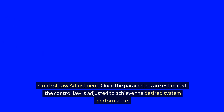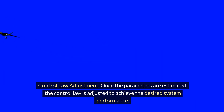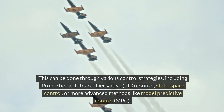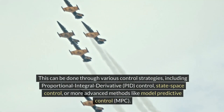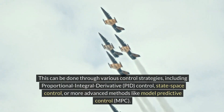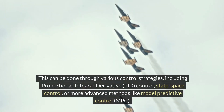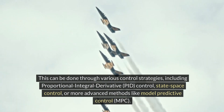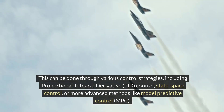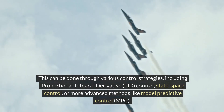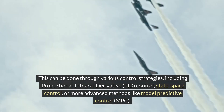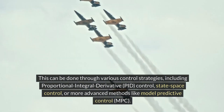Once the parameters are estimated, the control law is adjusted to achieve the desired system performance. This can be done through various control strategies, including proportional integral derivative (PID) control, state space control, or more advanced methods like model predictive control (MPC).